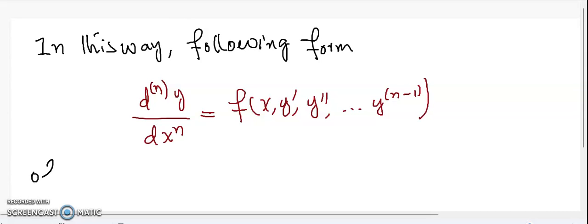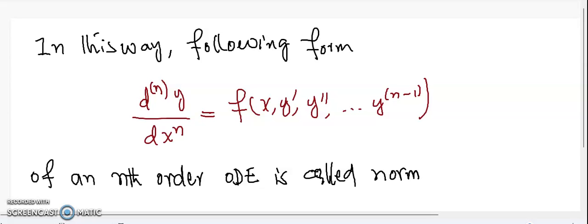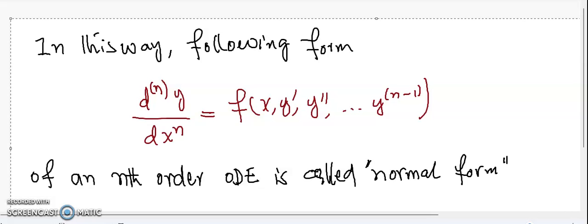This form of an nth order ODE is called normal form. dy/dx = f(x,y) is the normal form of a first order ODE.